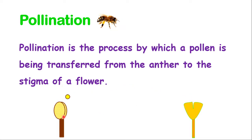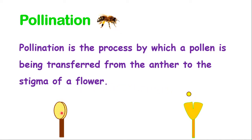Notice the demonstration. The anther, which is part of the male part of a flower, produces pollen. And the pollen will be transferred to the stigma, which is part of the female part of the flower.